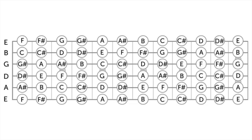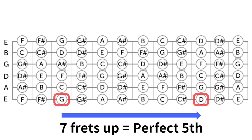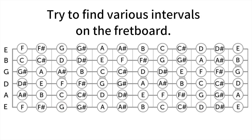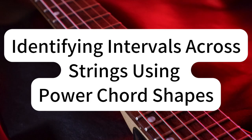You can locate these intervals on your guitar by counting the number of frets between the two notes. For instance, a perfect fifth interval from any note can be determined by advancing seven frets from that note. Understanding intervals will equip you with a profound insight into how chords and scales are constructed and how melodies interact with the underlying chords. It's a crucial concept for any guitarist, irrespective of your preferred musical style. Recognizing intervals across strings can significantly enhance your ability to navigate the fretboard and understand scales and chords more intuitively.